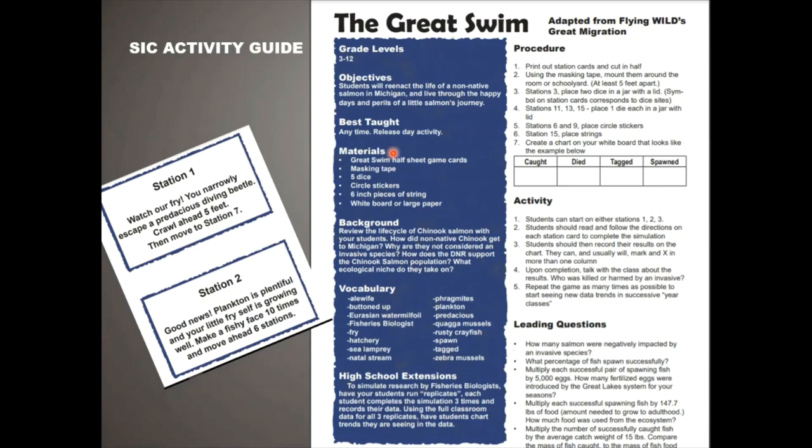Sometimes a station tells them to go ahead, sometimes to go backwards. Sometimes they roll dice to figure out how far to move. Sometimes they die — a predator eats them or a fisherman catches them. They get tagged at one point. They might be raised in a hatchery or in a salmon in the classroom tank, giving them a slightly better shot at survival.